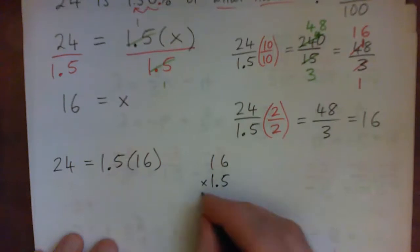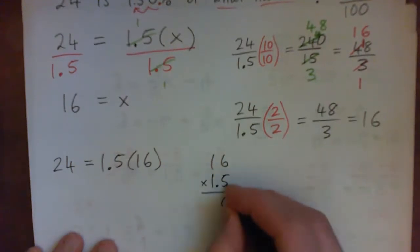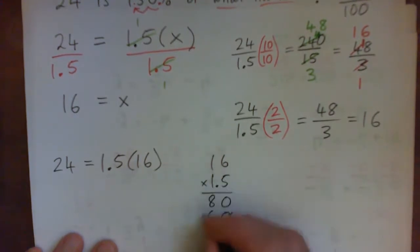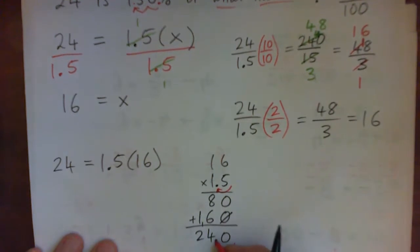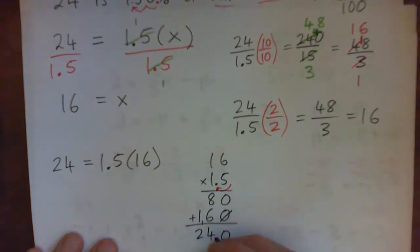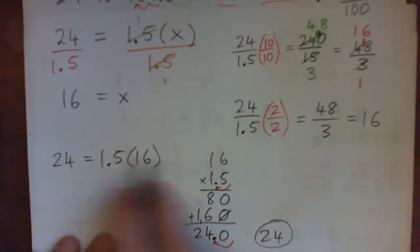I'm going to multiply really quickly. 5 times 6, 30. Carry 3. 5 times 1 is 5 and 3 is 80. Put down a 0. 1 times 6 is 60. 1 times 1 is 1 and add these numbers together and we get 4 and 1, 2. 240. But we have one decimal point in the multiplication. So we need to have one decimal point in the answer. 24.0 or 24. Okay, so that worked. So it checks out.